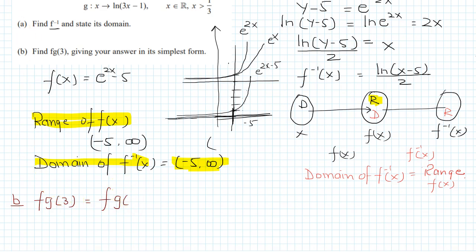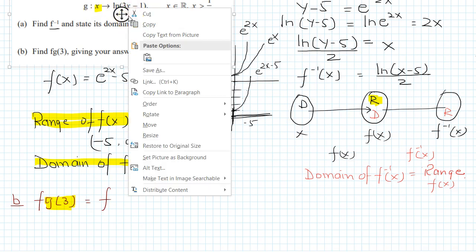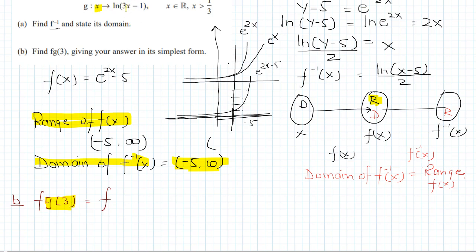To find fg(3), we first evaluate g(3). From g(x) = ln(3x - 1), we substitute x = 3: g(3) = ln(3×3 - 1) = ln(9 - 1) = ln(8). So fg(3) = f(ln 8).